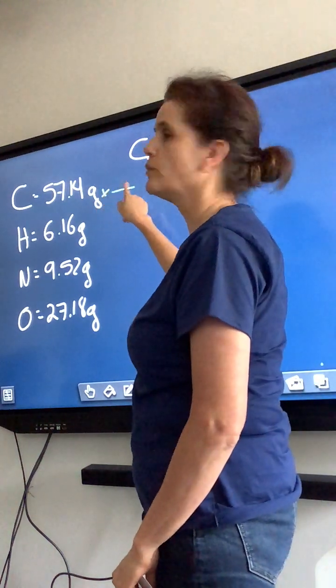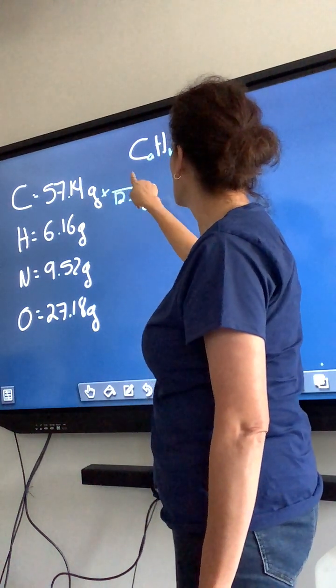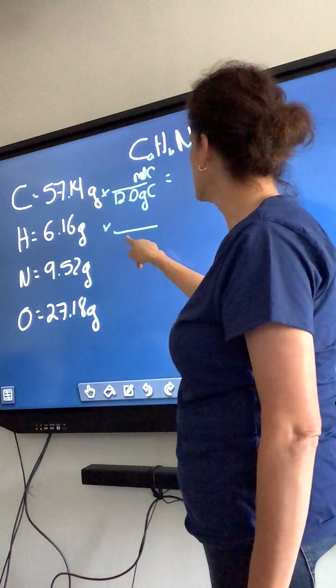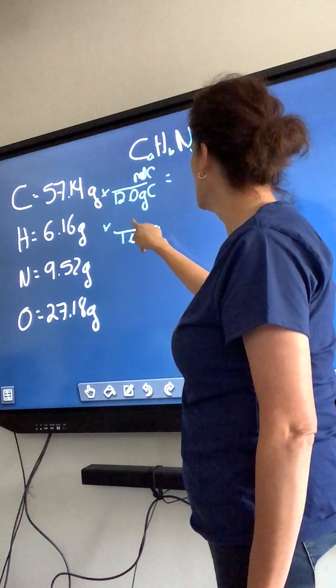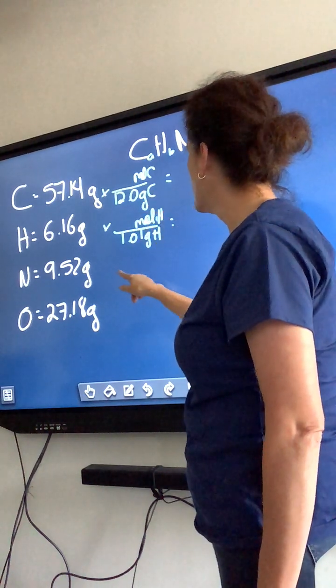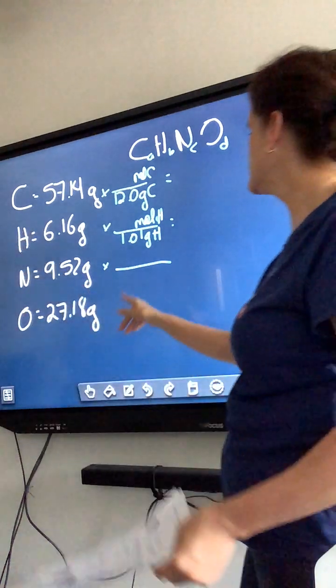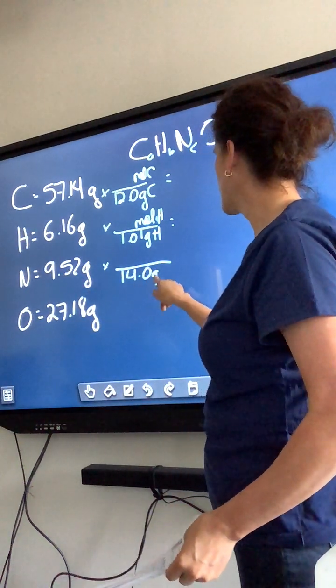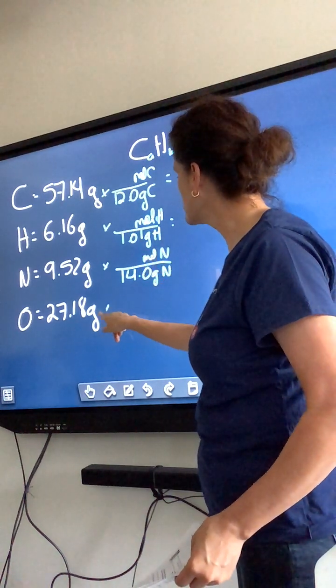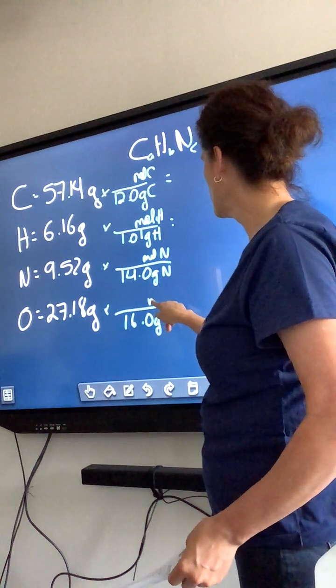So, for carbon, it's 12.0 grams of carbon per mole. For hydrogen, it's 1.01 grams of hydrogen per mole. You're literally just looking them up in the periodic table. For nitrogen, it's 14.0 grams of nitrogen per mole. And for oxygen, 16.0 grams of oxygen per mole of oxygen.